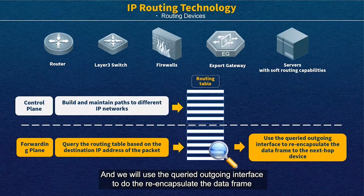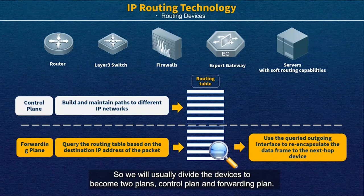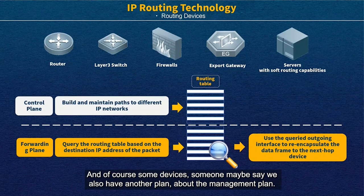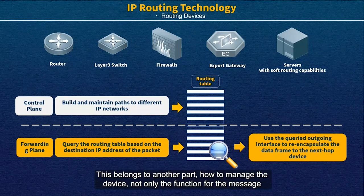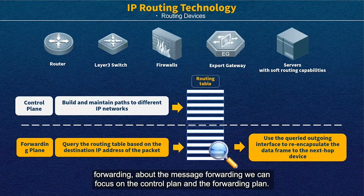We will use the outgoing interface to do the re-encapsulation of the data frame to the next hop device — maybe it's a router, maybe it's a terminal. So we usually divide devices into two planes: control plane and forwarding plane. Some may also mention another plane — the management plane — about how to manage the device, not just the main function for message forwarding. For message forwarding, we focus on the control plane and the forwarding plane.